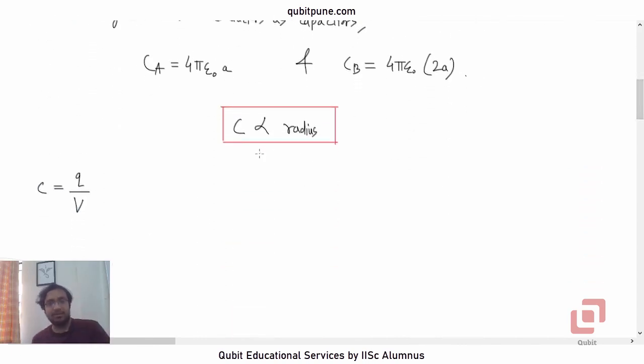So first of all, what I will do is I will write it down here. Note that CA/CB will be equal to A/(2A). So we are just carrying this piece of information forward. CA/CB will be A/(2A), so this will be half.